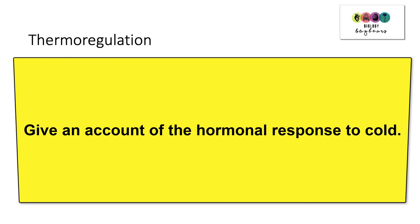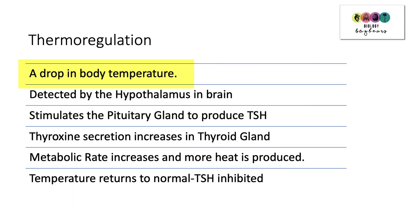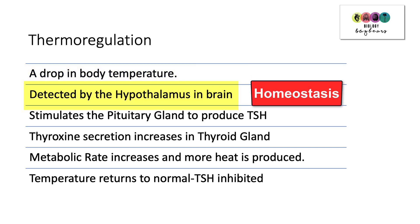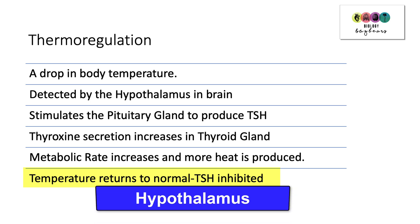Finally, give an account of the hormonal response to cold. This could be part of a question on homeostasis tied in with the endocrine system. If there was a drop in body temperature, it would be detected by the hypothalamus in the brain — the part of the brain that controls homeostasis. This would result in the pituitary gland being stimulated to produce TSH, which would then cause the thyroid gland to increase thyroxine secretion. This results in an increased metabolic rate and more heat being produced. The temperature eventually returns to normal, which is detected by the hypothalamus, and TSH would be inhibited.